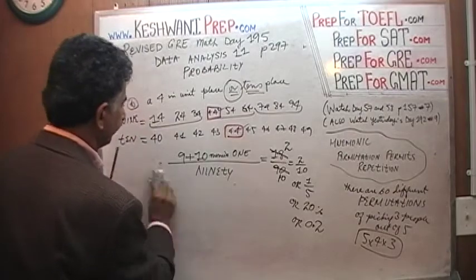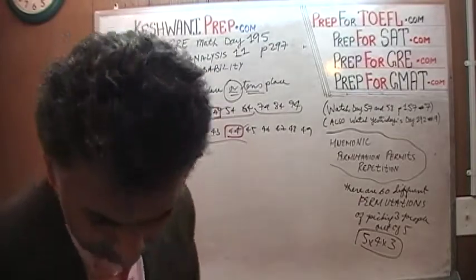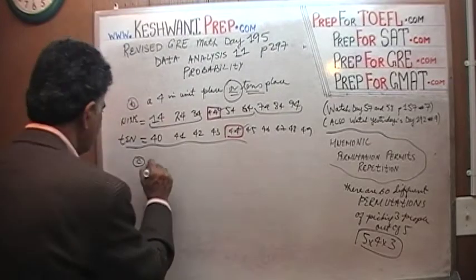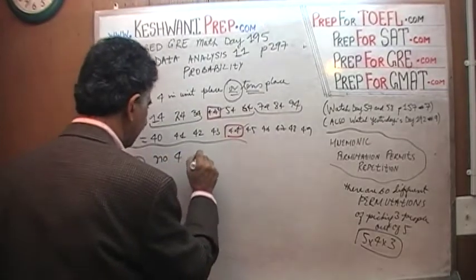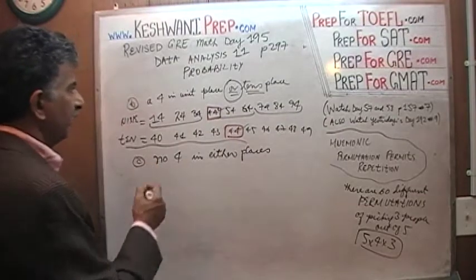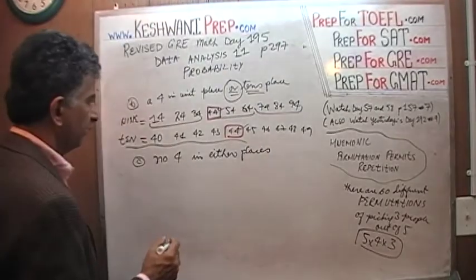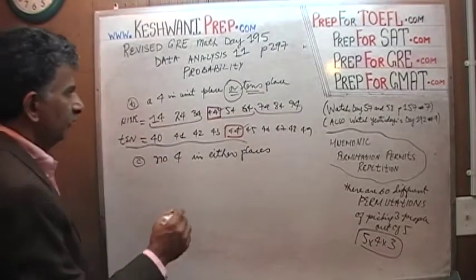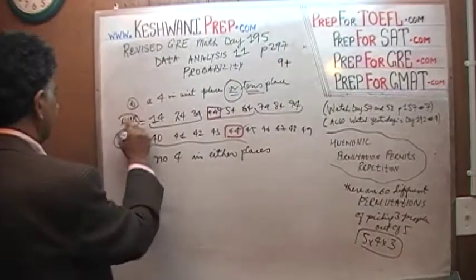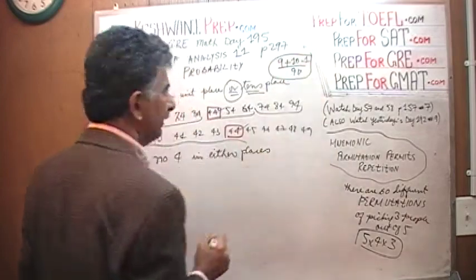Let's do Part C. In Part C, they're asking us: what are the odds of picking a two-digit number which has no four in either place? Well, that's very simple. We just found that the odds of picking a four in the unit place or the tens place was nine plus ten minus one over ninety, which is eighteen over ninety.